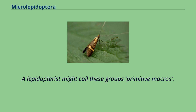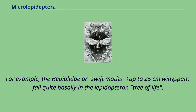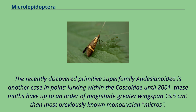A lepidopterist might call these groups primitive macros. Furthermore, even all of the non-detrition moths are not small. For example, the hapylidae or swift moths fall quite basely in the lepidopteran tree of life. The recently discovered primitive superfamily andigenoidea is another case in point, lurking within the cossoidea until 2001; these moths have up to an order of magnitude greater wingspan than most previously known monotrition micros.